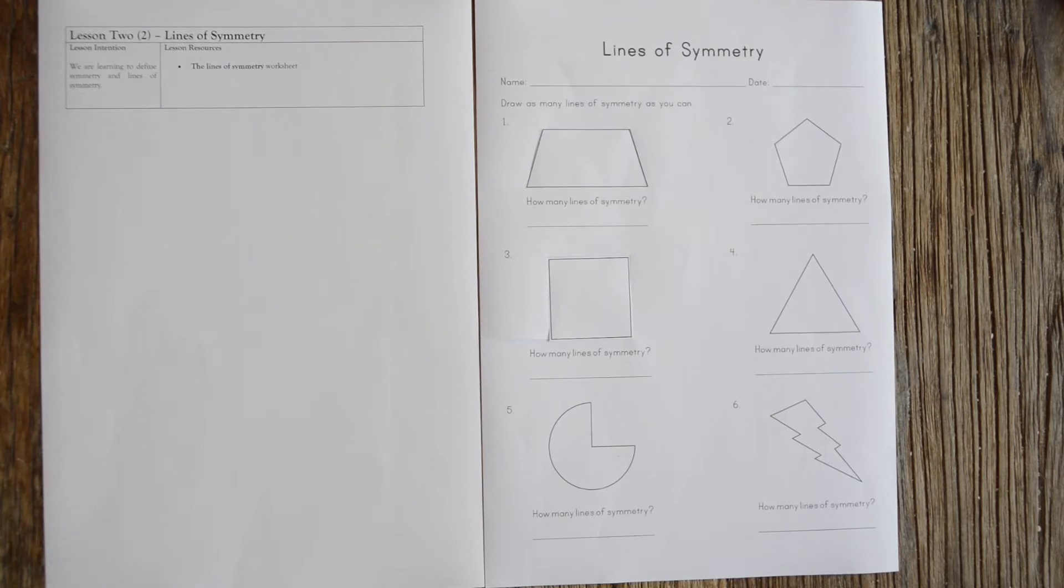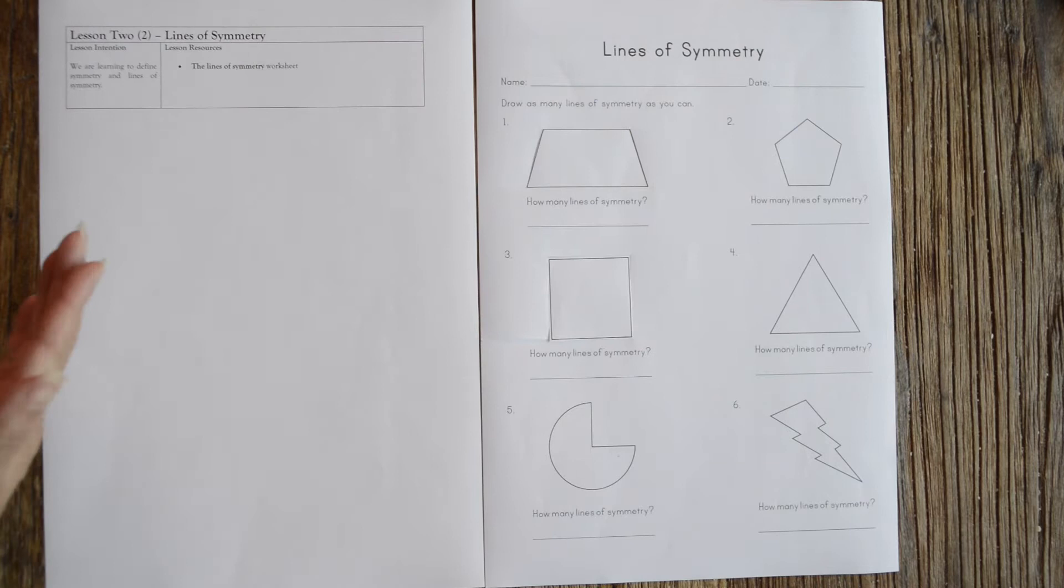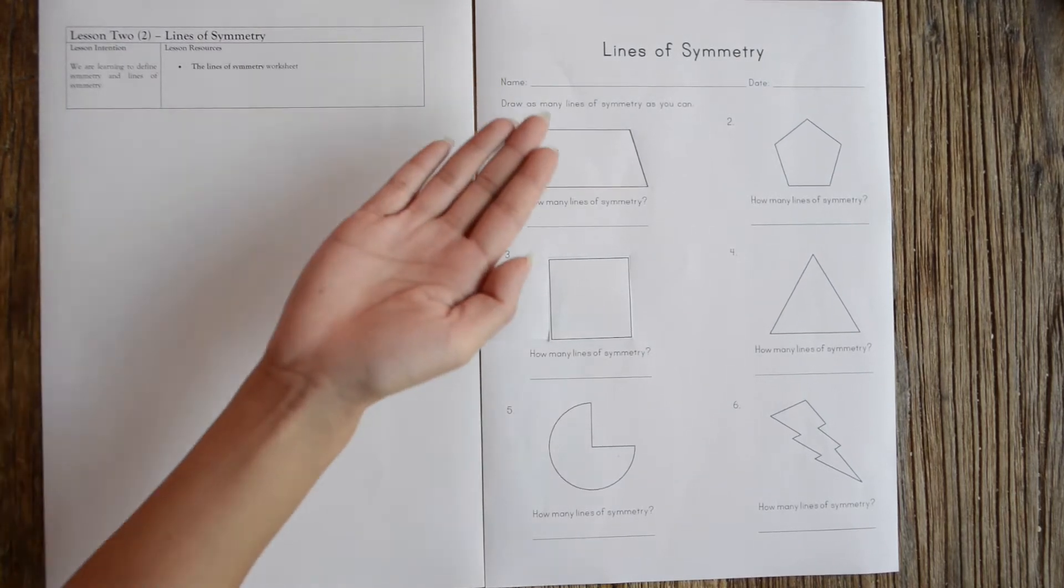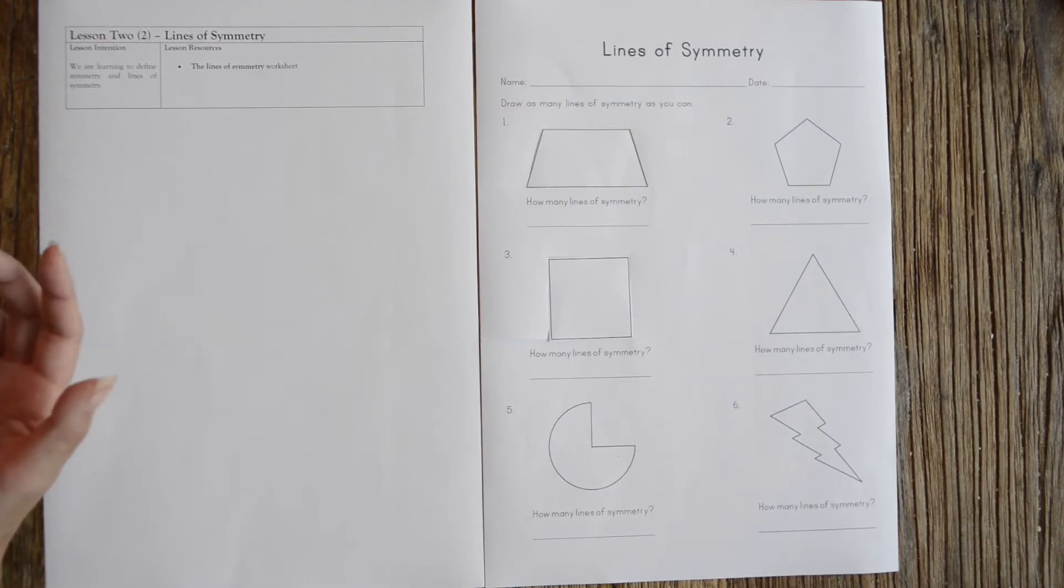Symmetry is basically when an object, if you can fold it in half, it mirrors the other side. The line of symmetry is where that line meets in the middle. It's best for me to actually show you. I've got the worksheet that I want you to work through today. It's mathematical.